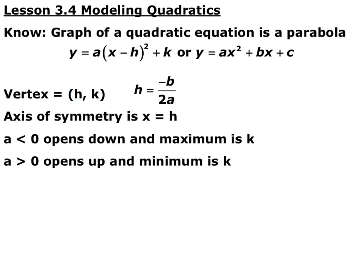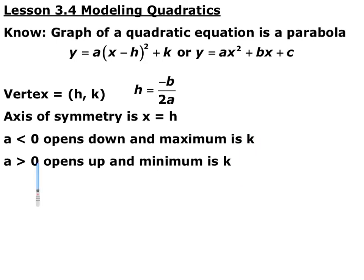How to calculate the vertex if you have it in standard form. Axis of symmetry is always x equals the x-coordinate of the vertex. If you have a negative a value, that means it's opening down, so your maximum value is whatever your y-coordinate of your vertex is. If a is positive, it's opening up, so you have a minimum at the y-coordinate of your vertex. This is what we're going to be utilizing to maximize and minimize problems.